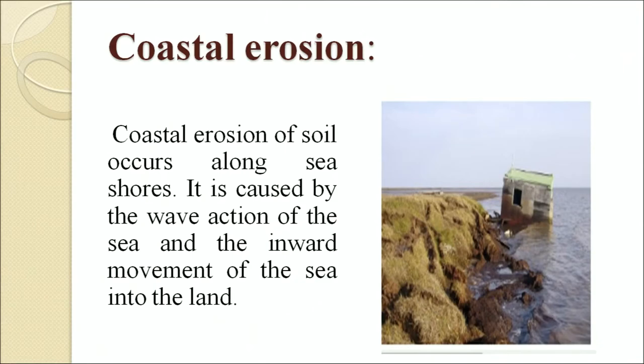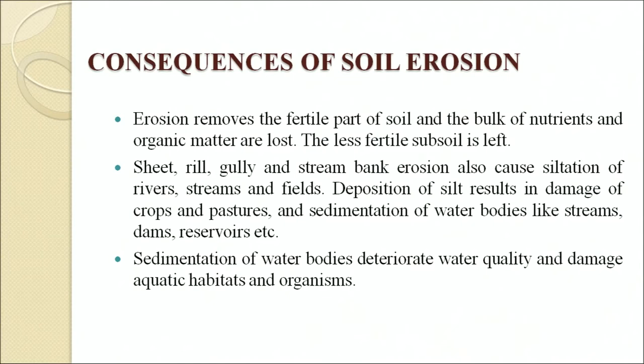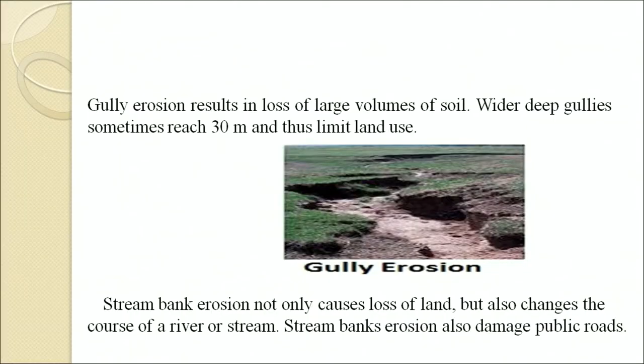Consequences of soil erosion: erosion removes the fertile part of the soil and the bulk of nutrients and organic matter are lost. Sheet, rill and gully erosion also cause siltation of rivers, streams and fields. Deposition of soil and silt results in damage to crops and pastures, and sedimentation of water bodies like streams, dams and reservoirs, which deteriorates water quality and damages aquatic habitats. Gully erosion results in loss of large volumes of soil; wider deep gullies can sometimes reach 30 meters, limiting land use.